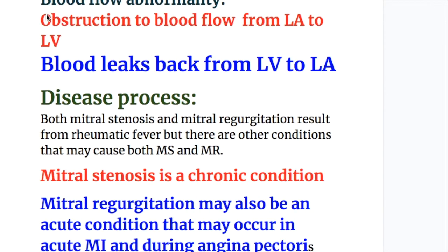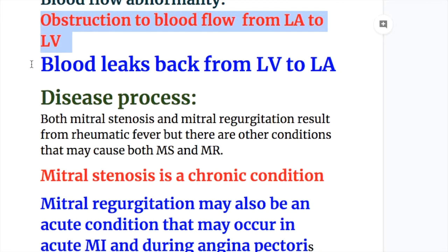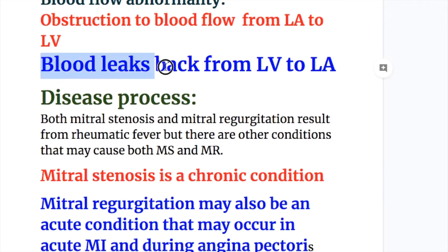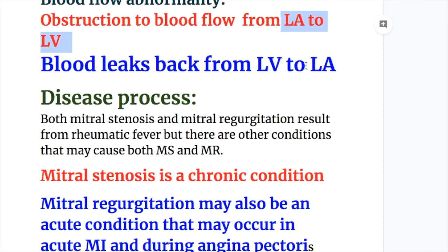Blood flow abnormalities: In mitral stenosis, there is obstruction to blood flow from the left atrium to the left ventricle. Whereas in mitral regurgitation, blood leaks back from the left ventricle to the left atrium when it contracts. So in MS there is obstruction from LA to LV, while in mitral regurgitation blood flow leaks back from the left ventricle to the left atrium.